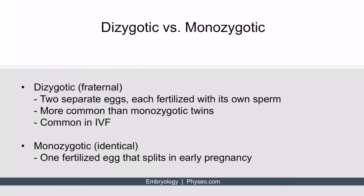There are two different types of twins that can arise during pregnancy. The first type are dizygotic, or fraternal twins. These twins arise from two separate eggs, each of them fertilized with their own sperm — one sperm isn't shared between two eggs. This type of twinning is more common than monozygotic twins.